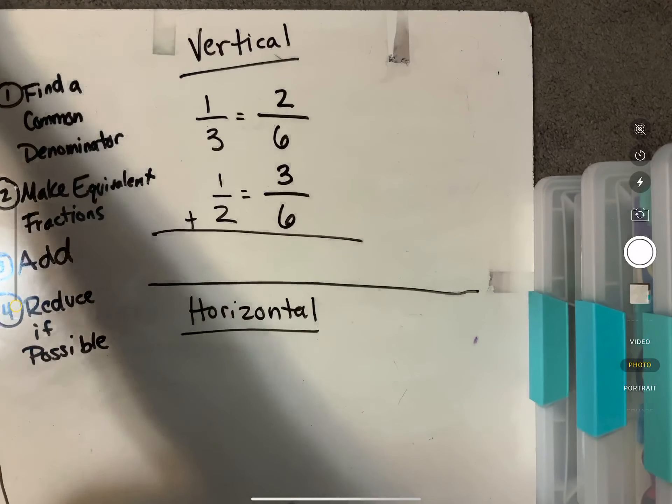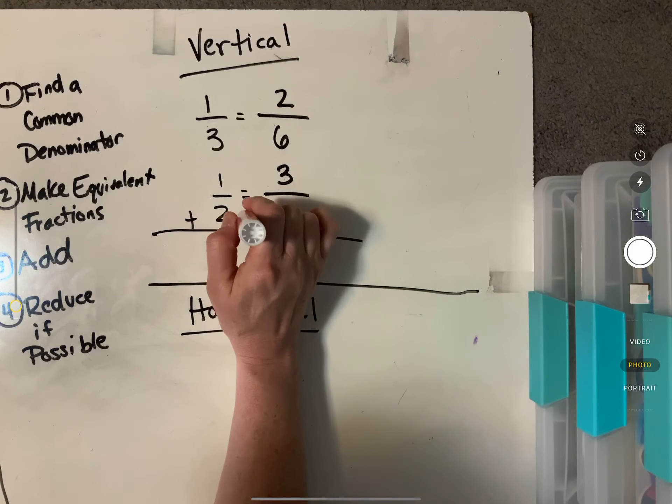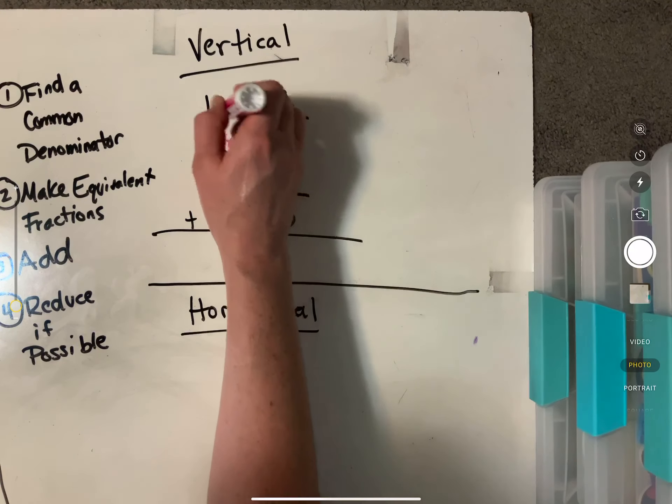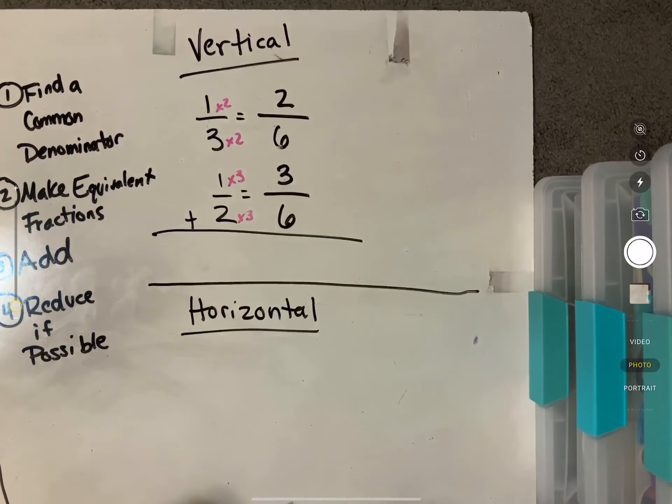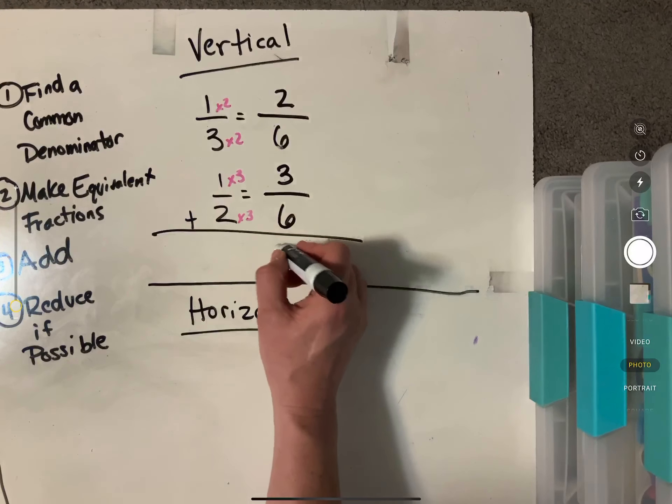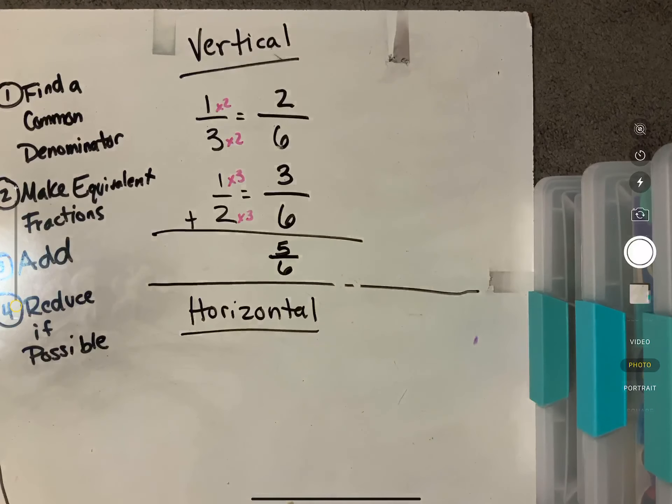And what some people like to do is put times three times three times two times two. If that's helpful for you, that's totally fine, just to kind of keep yourself aware of what you're multiplying by just so you can remember. But then when we add these up, two plus three is five and our denominator is going to be six.